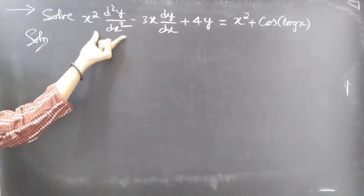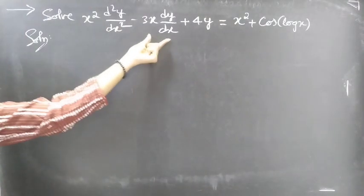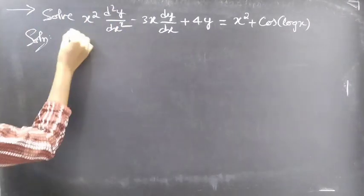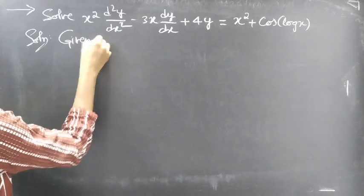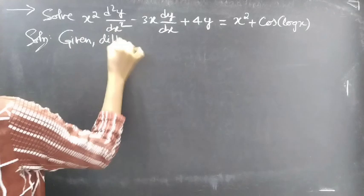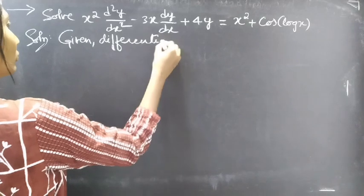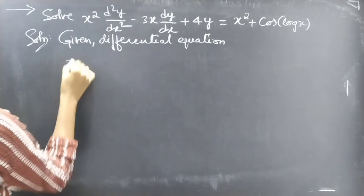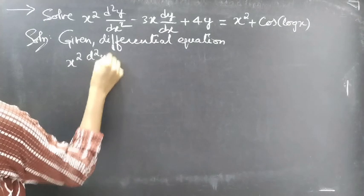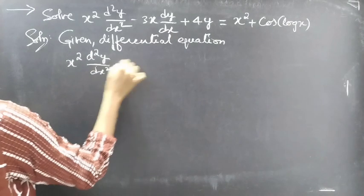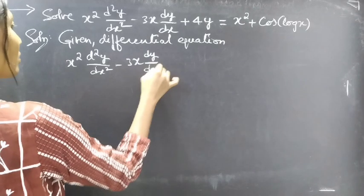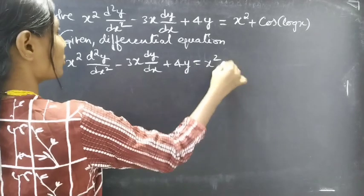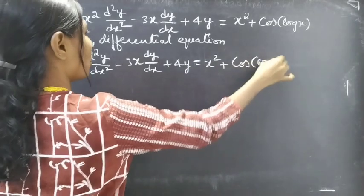Problem. Solve x² · (d²y/dx²) minus 3x · (dy/dx) plus 4y equals x² plus cos(log x).